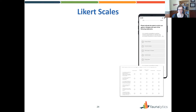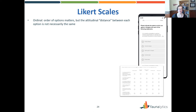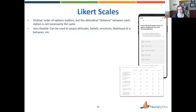Likert scales are ordinal, meaning the order of options matters, but the psychological distance between those options isn't always the same. The difference between 'strongly disagree' and 'somewhat disagree' isn't necessarily the same as the difference between 'somewhat disagree' and 'neutral.' Likert scales are very flexible — you can use them to assess attitudes, beliefs, emotions, likelihood of behavior, and all kinds of things. People often ask how many points you should have; I've seen anywhere from three to eleven. Generally, five to seven is recommended, as it allows enough variation without being confusing. I prefer five points, but five and seven are both very common.